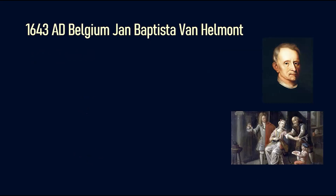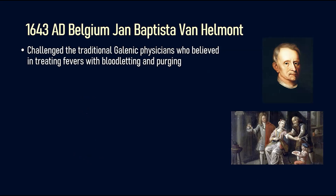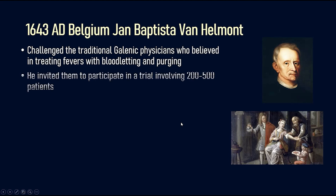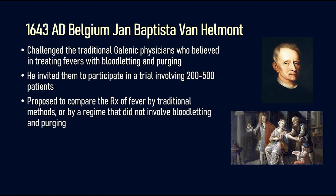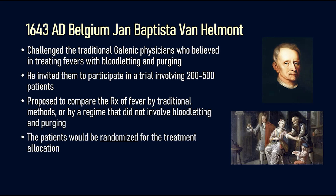In 1643 AD, a Belgian scientist named Van Halman challenged the traditional Galenic physicians who believed in treating fevers with bloodletting and purging, which was very common during that period. He invited them to participate in a trial involving 200 to 500 patients, proposing to compare treatment of fever by traditional methods like bloodletting and purging versus a regime that did not include this. For the first time, he proposed that patients would be randomized for treatment allocation — introducing the concept of randomization.